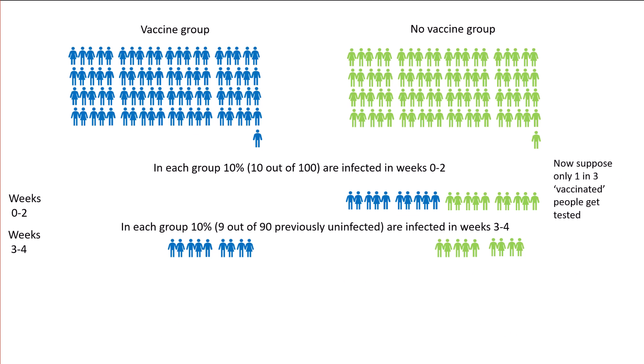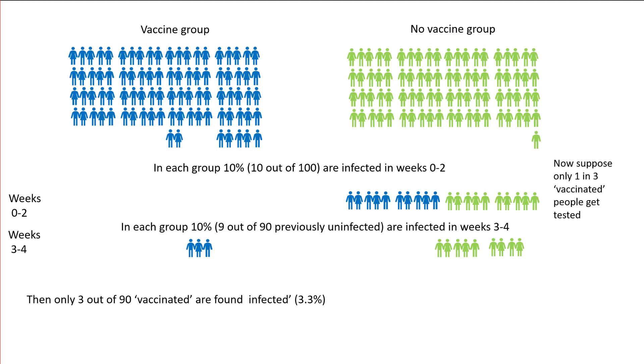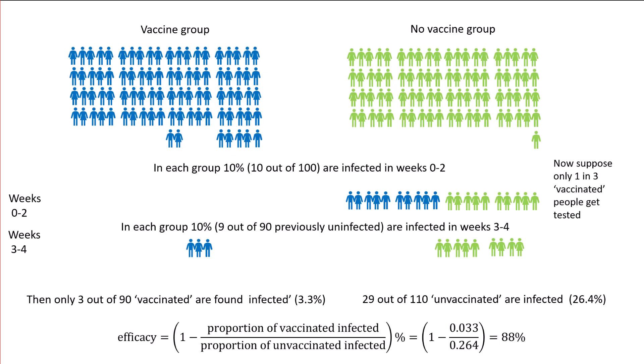But things can get even more ridiculous. It's quite common for those classified as vaccinated — in this case everyone who got the vaccine after two weeks — to be less likely to be tested for the disease than those who don't get the vaccine. For example, in the big observational trial of the Pfizer vaccine in Israel, each unvaccinated person was six times more likely to be tested in any given week than a vaccinated person. So suppose only one in three of the vaccinated people get tested: that leaves just three out of 90 classified as vaccinated found to be infected — 3.3 percent. We still have 29 out of 110 unvaccinated infected at 26.4 percent, and now the efficacy has pushed up to 88 percent, even though it's simply a placebo.